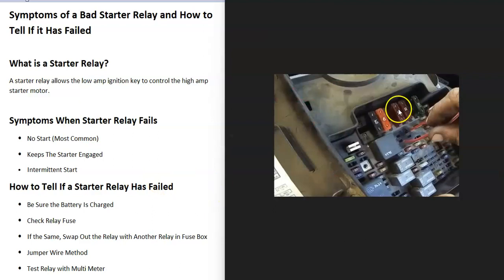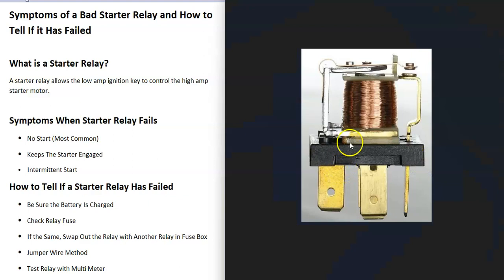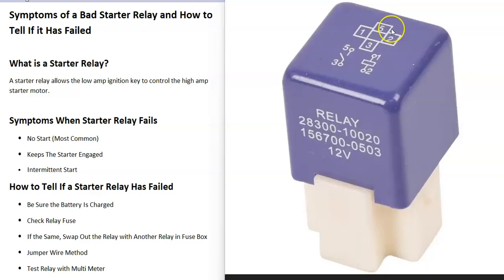Another method many people use is to jumper the connections that are supposed to complete the circuit when that contact closes. When the contact closes, it sends power through between these two pins. If you jumper these two pins, it sends power to the starter. When you do this method, put the key in the on position and find out which two pins need to be jumpered. If you look at the side of the relay, it'll show the pins with the little door symbol that's open. Here, pins 3 and 5 need to be jumpered to complete the circuit. Pins 3 and 5 would be right here—these two pins.